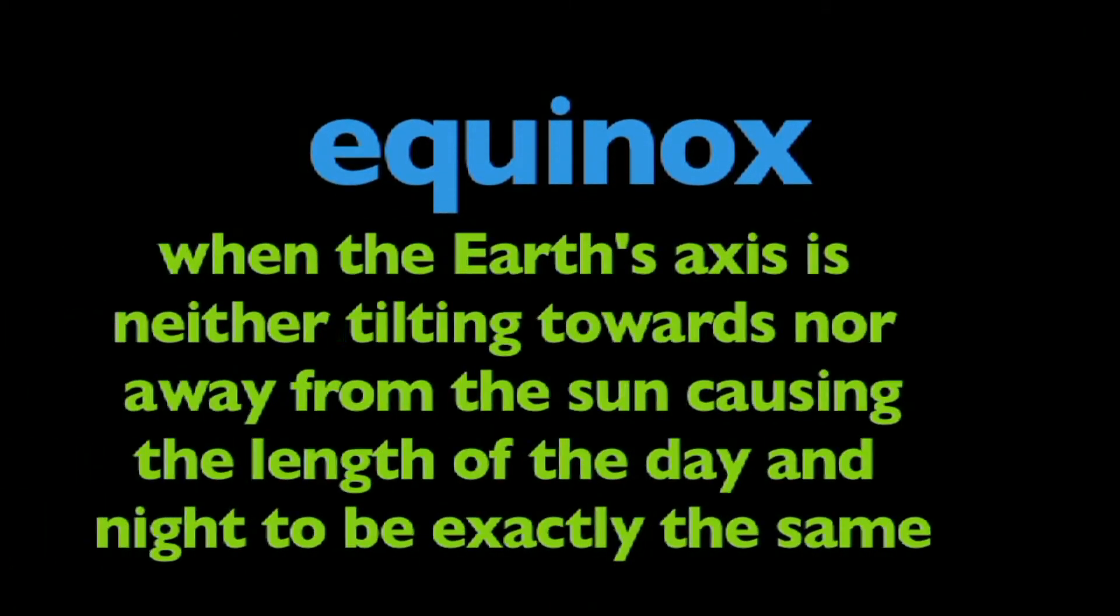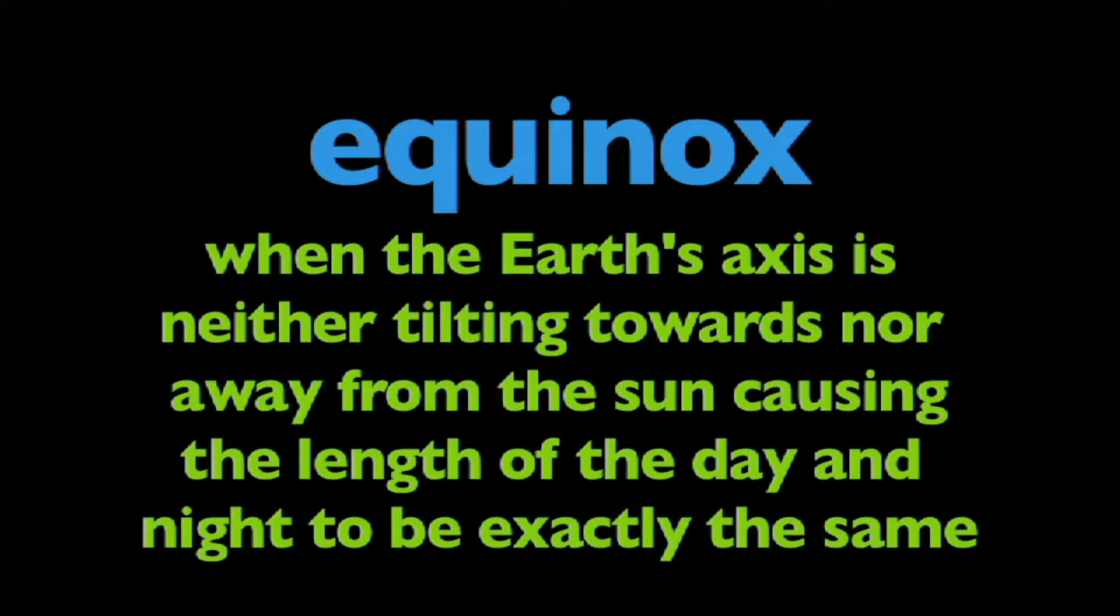In this program, we're going to learn about the equinox. What is the equinox? The equinox occurs when the Earth's axis is neither tilting towards nor away from the sun, causing the length of the day and night to be exactly the same.